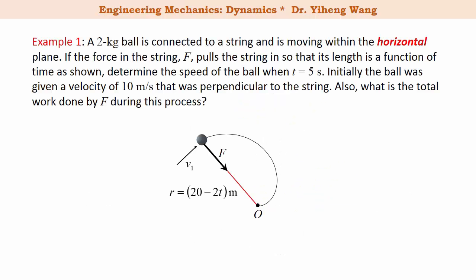Let's look at this example. There's a ball connected to a string moving within the horizontal plane. Initially it was given a velocity of 10 meters per second perpendicular to the string, and there's a force inside the string pulling it shorter — the length of the string is given as a function of time. We need to determine the speed of the ball at t = 5 seconds and the total work done by this force during the process.